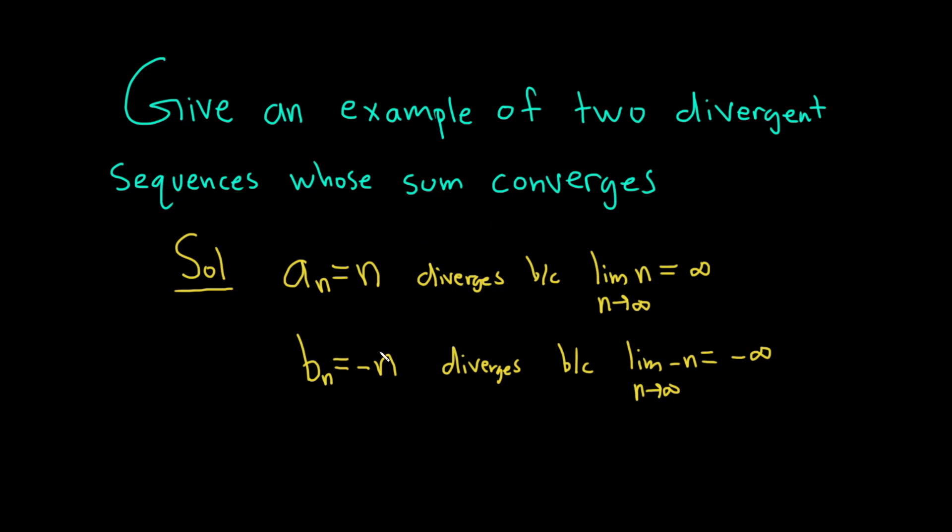Both of these are divergent sequences. But now if we look at the sum, taking the limit as n approaches infinity of a_n + b_n, this is equal to the limit as n approaches infinity of n + (-n).